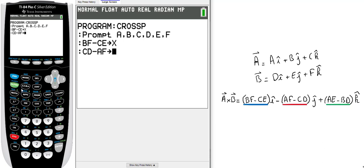The last one is a times e minus b times d, and I will store this data in z. Press enter.